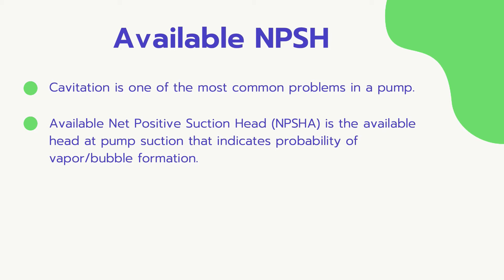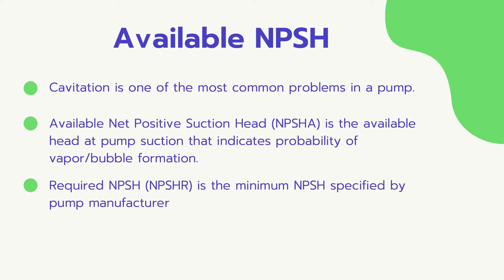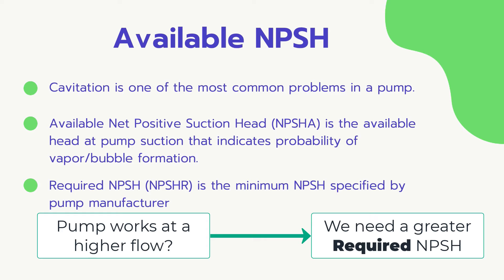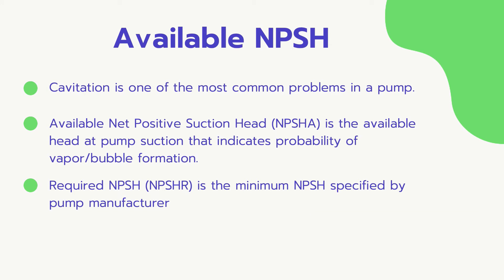But how much should the available net positive suction head be? Well, this mainly depends on the flow rate and the differential head of the pump. Each pump has its required NPSH, or NPSH-R. This is specified by the pump supplier and it depends on the operating conditions. So the NPSH-R at the rated flow is not the same as at 50% of the rated flow — at 50%, the NPSH-R would be smaller, which means less probability of cavitation.